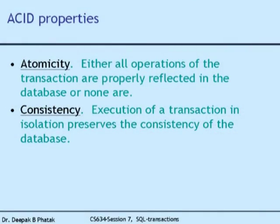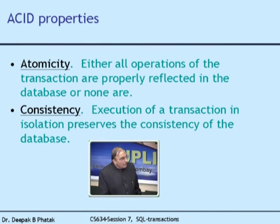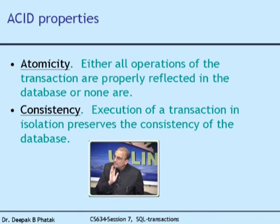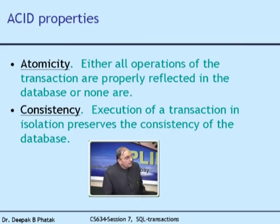Consistency means execution of a transaction in isolation preserves the consistency of the database. Not only must these two operations be done, but under whatever crashes or multiple-user operations, if a transaction is executed in isolation — no other user on the system — the consistency of the database is guaranteed to be preserved. Atomicity is also guaranteed when a transaction is executed in isolation, no matter what crashes occur.